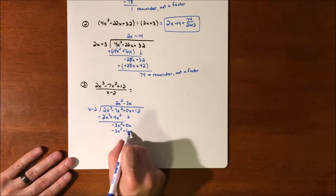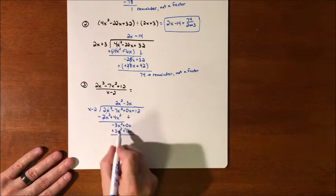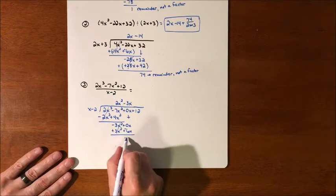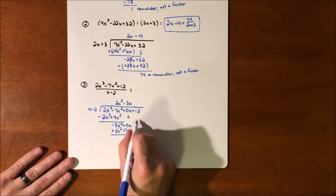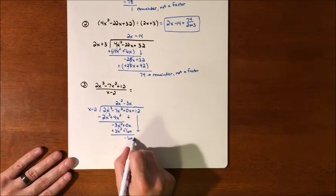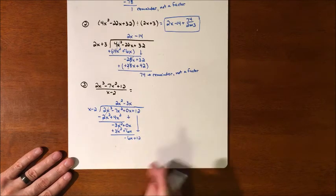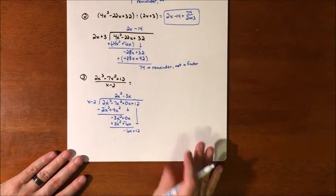We're going to subtract these, so we're going to change their signs. Cancels. Negative 6x. Bring down the 12.